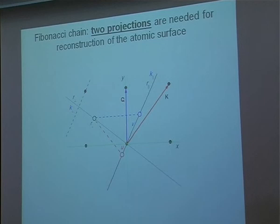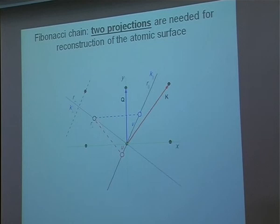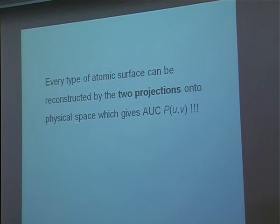From this second direction you can immediately get the point on the atomic surface. So either we are discussing the atomic surface or the distribution given by these two variables. Every type of atomic surface can be reconstructed by the two projections in physical space which give the average unit cell. Now we know that they are completely equivalent, and we can forget about high dimensions and work only in physical space using this distribution.